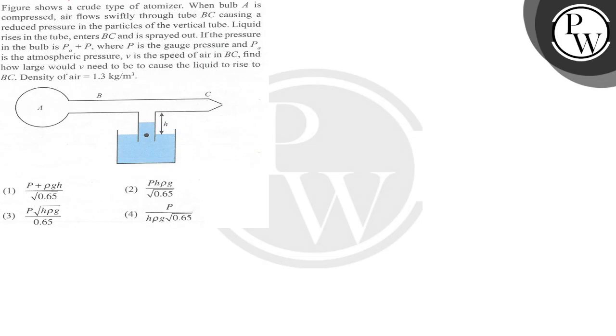Hello Batcho, we have a question. This figure shows a crew type atomizer. When a bulb is compressed, air flows swiftly through tube BC, causing a reduced pressure in the particles of the vertical tube.